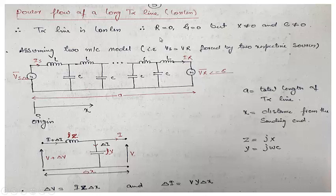We are assuming again a lossless transmission line — that means R is equal to 0 and G is equal to 0. But X, as in the previous case, is non-zero, and here C also is non-zero. We are assuming this to be a two-machine model, meaning we have a generating source and a generator at each end. We are making Vs equal to Vr in magnitude, forced by two respective sources. Let A be the total length of the transmission line.